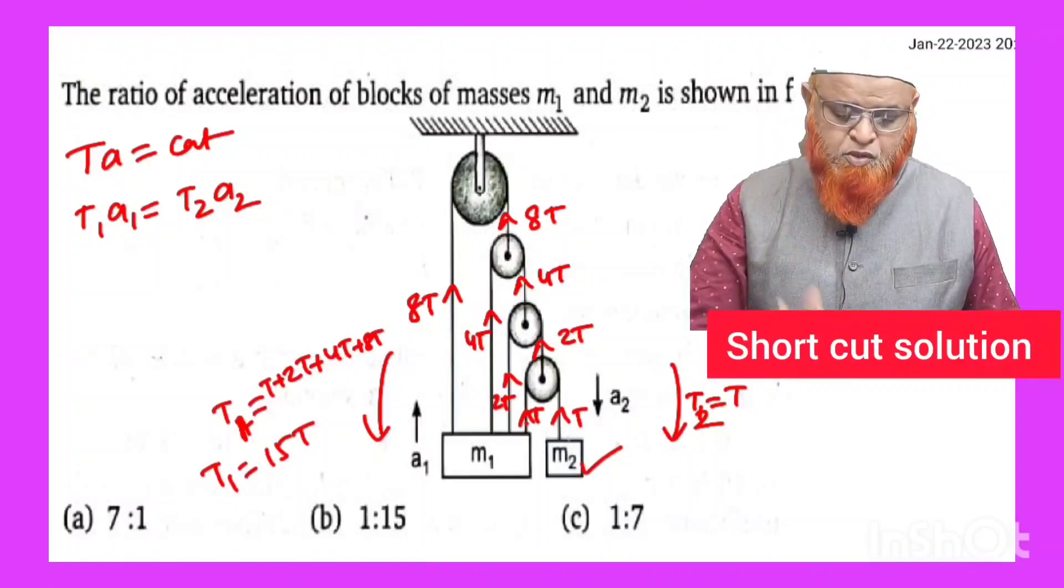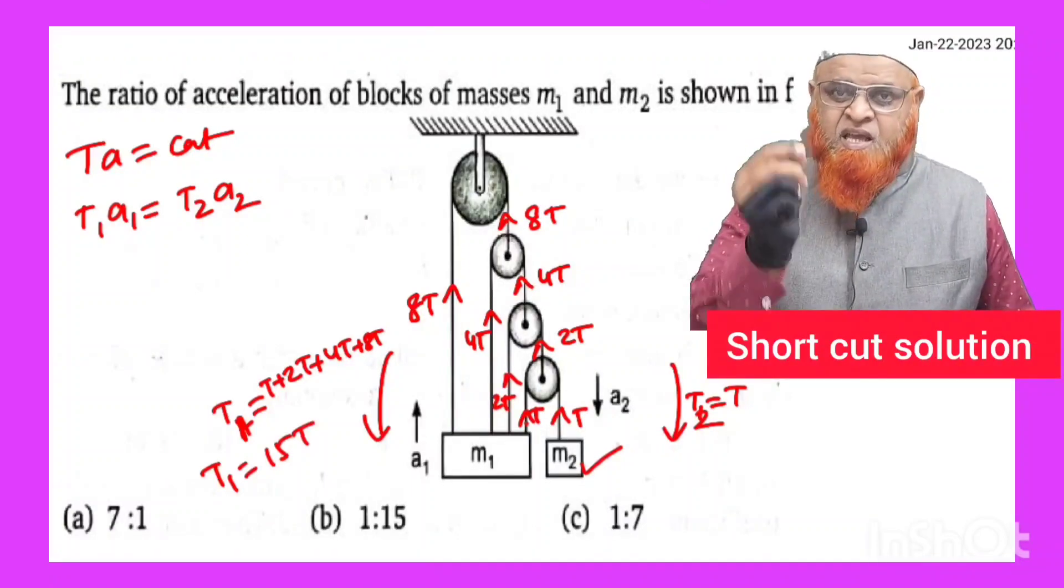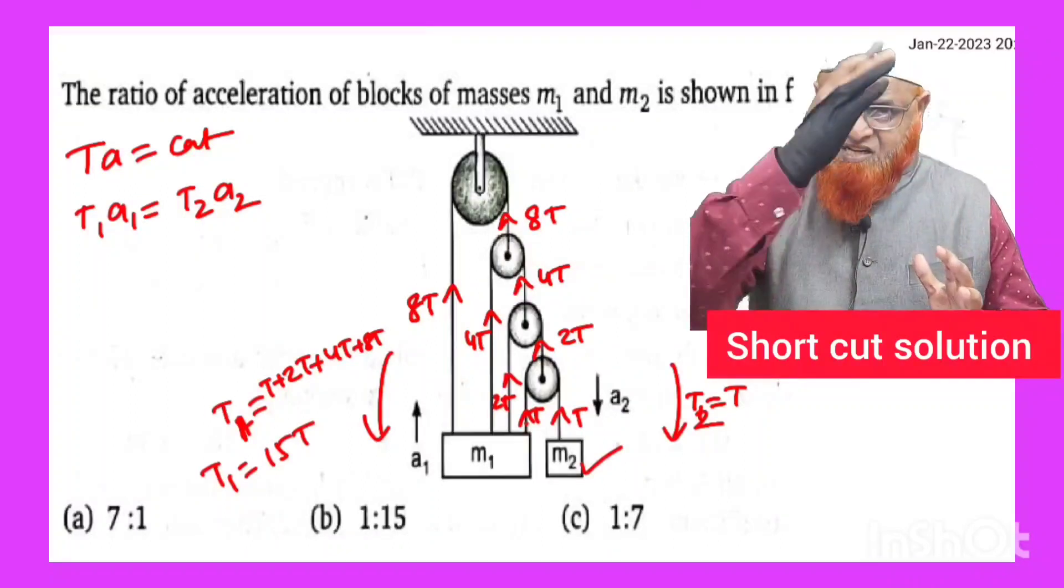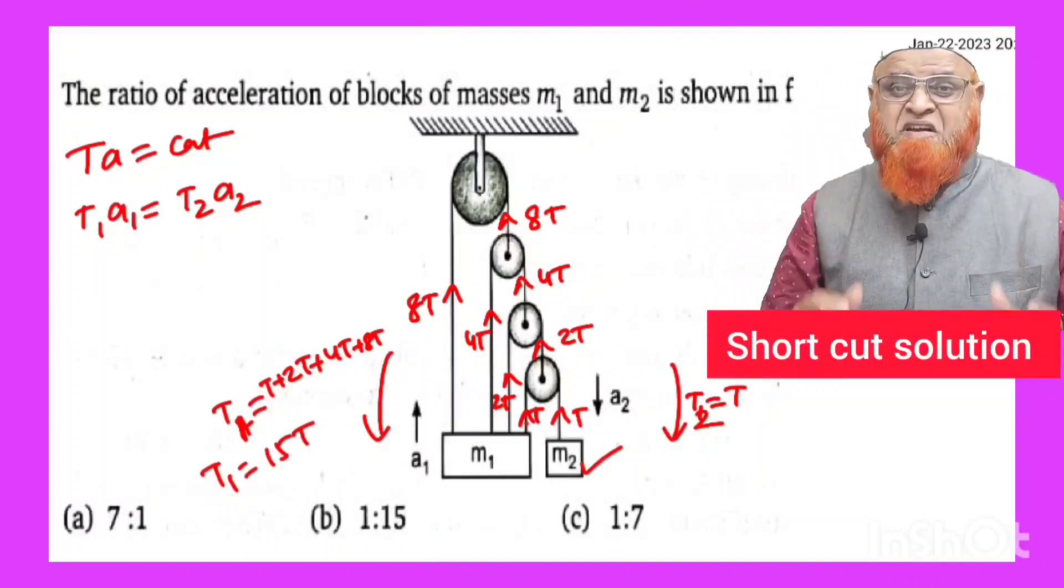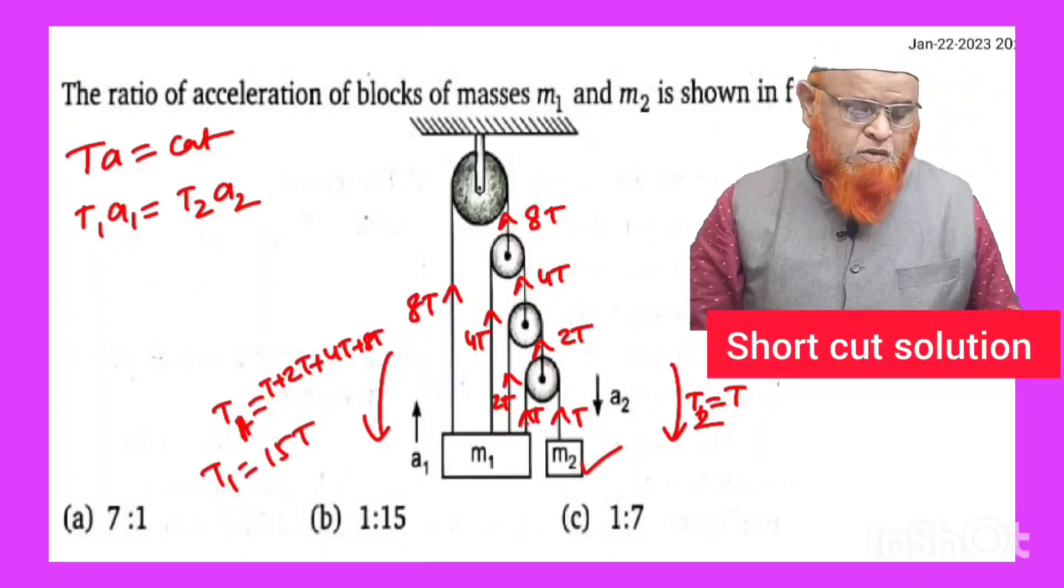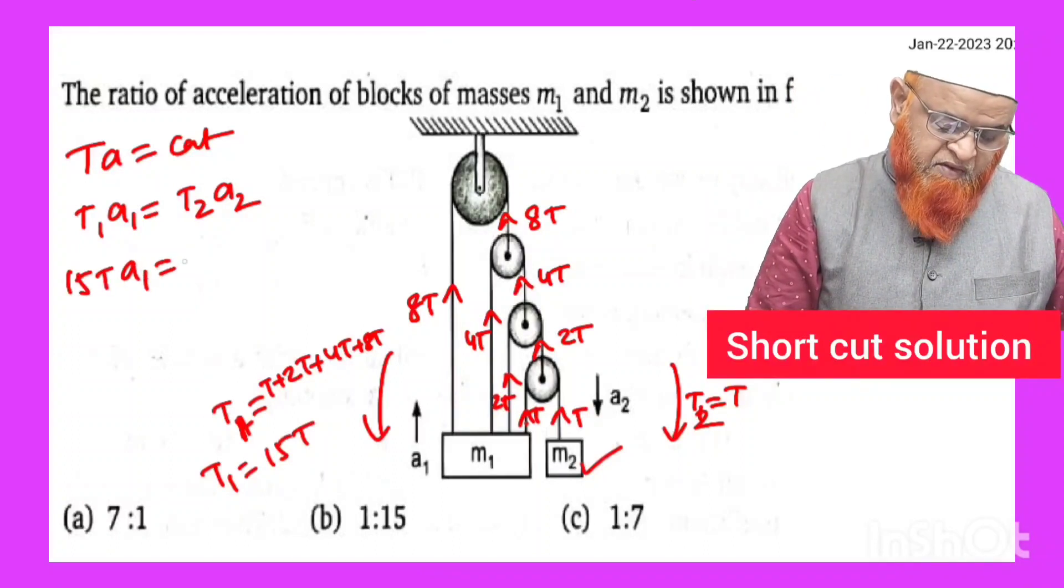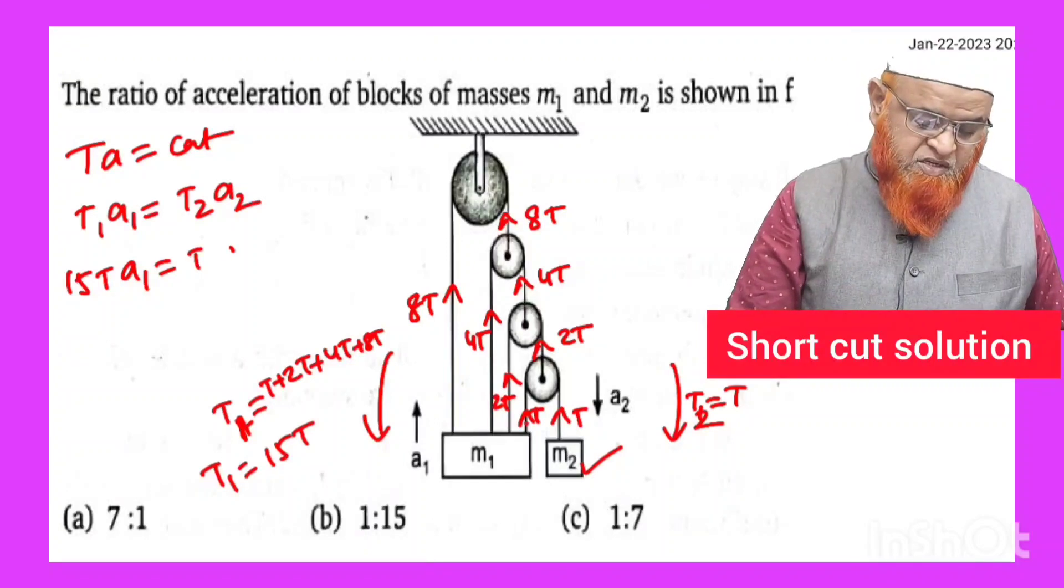There is only small block, it is m2 which is connected to tension T, whereas a larger block of mass m1 is connected to the total tensions. If you go on adding, it is going to be 15T here. So anyhow T1 is considered as 15T which is taken as a1 and T2 is taken as only T that is taken as a2 here.